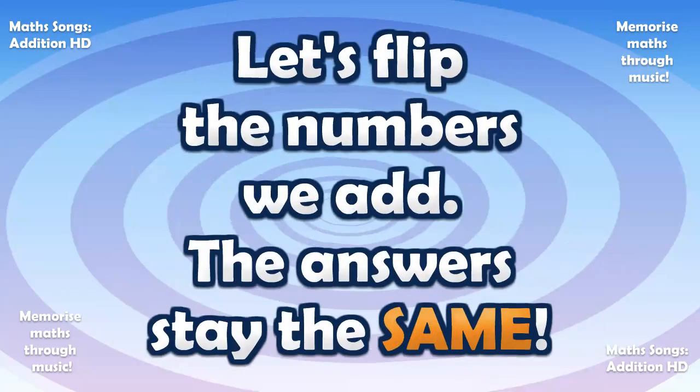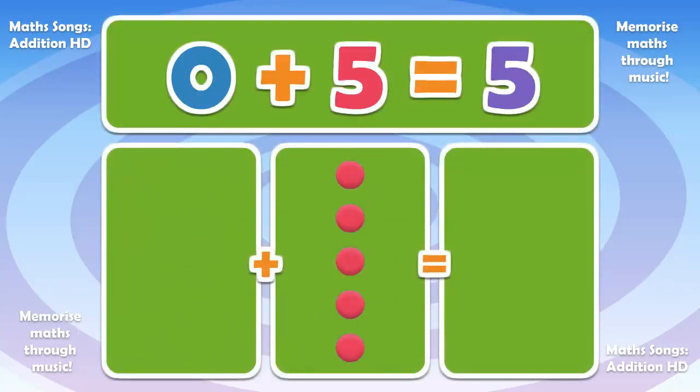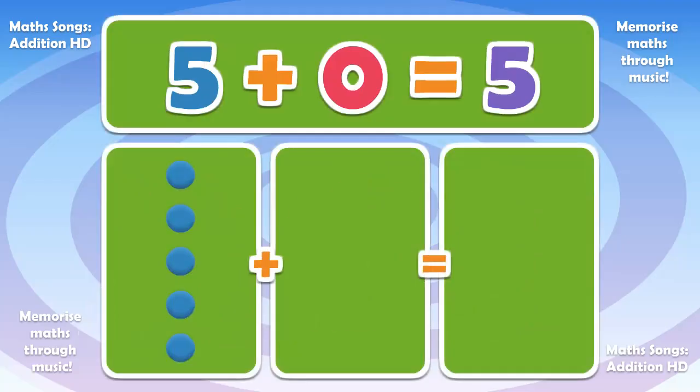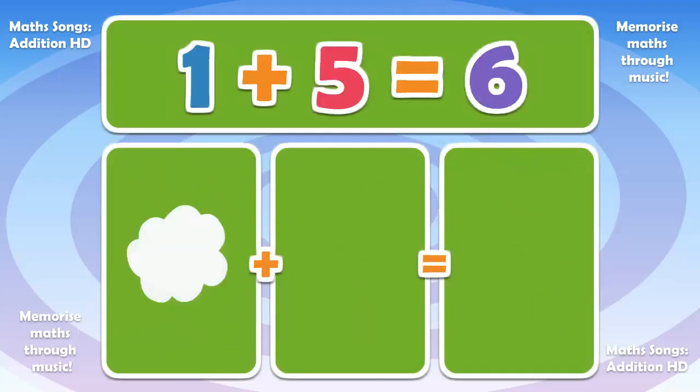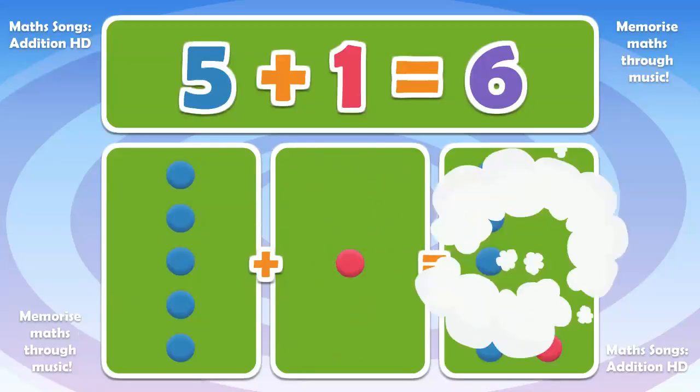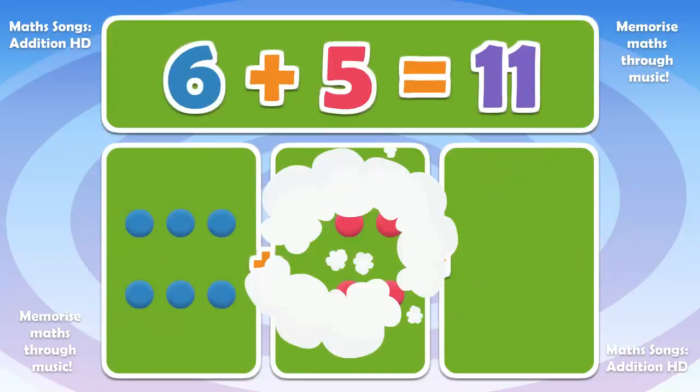Let's flip the numbers we have. The answers stay the same. 0 plus 5 is 5. 5 plus 0 is 5. 1 plus 5 is 6. 5 plus 1 is 6. 6 plus 5 is 11.